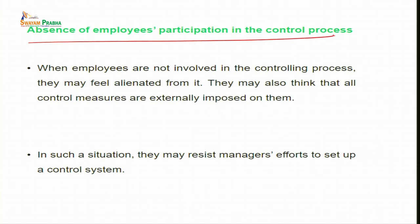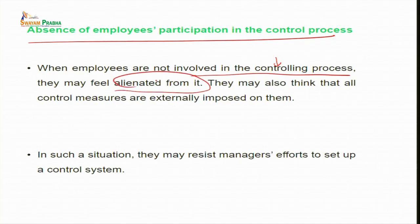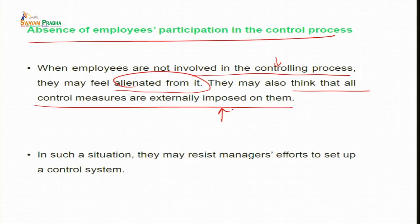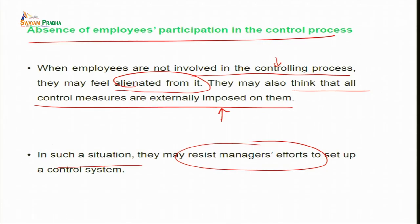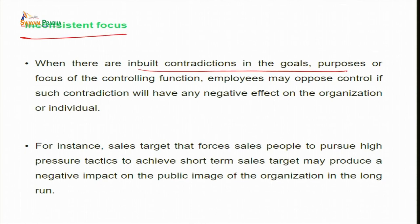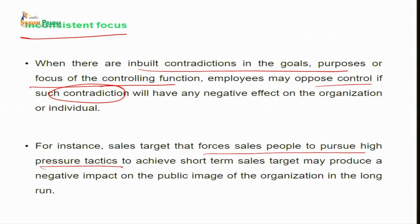The fourth reason is absence of employee participation in the control process. When employees are not involved in the controlling process and not made part of how the control mechanism will work, they may feel alienated and think that all control measures are externally imposed on them. This imposition makes them feel controlled and they may resist the manager's effort to set up a control system. The fifth reason is inconsistent focus — when there are inbuilt contradictions in the goals and purposes of controlling functions. For instance, a sales target that forces sales people to pursue high-pressure tactics to achieve short-term targets may produce a negative impact on the public image of the organization in the long run.